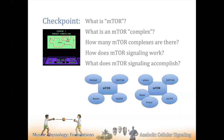mTOR signaling works through phosphorylation cascades — a bunch of kinases: PI3 kinase, protein kinase B, and mTOR itself is a kinase. Even the MAPK — mitogen activated protein kinase — we'll talk about that. ERK-MAPK signaling, RSK kinase — lots of kinases. A kinase is an enzyme that attaches phosphates to things. A phosphatase takes phosphates off — like PTEN, which is the exact opposite of PI3K.